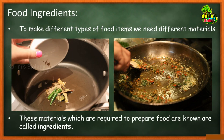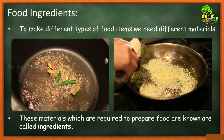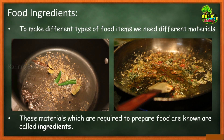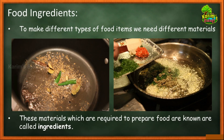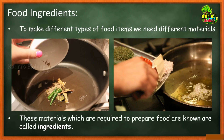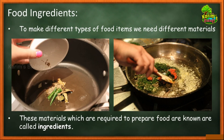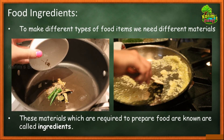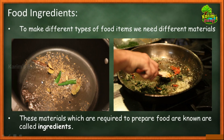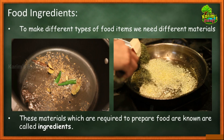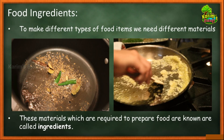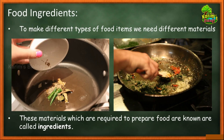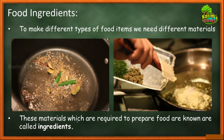The materials which are required to prepare food are known as ingredients. This is the definition you must know. When your mom cooks food it becomes very tasty — partly because of her skill, but also because she uses the right ingredients. We will discuss all these ingredients, how we get them, and where they come from, in this lesson. So remember: the materials which are required to prepare food are known as ingredients.